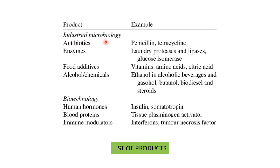Examples for industrial microbiology include: antibiotics such as penicillin and tetracycline; enzymes such as laundry proteases, lipases, and glucose isomerase; food additives such as vitamins, amino acids, and citric acid — things added to improve the nutrient value of food; and alcohol and chemicals such as ethanol in alcoholic beverages, gasol, butanol, biodiesel, and steroids.